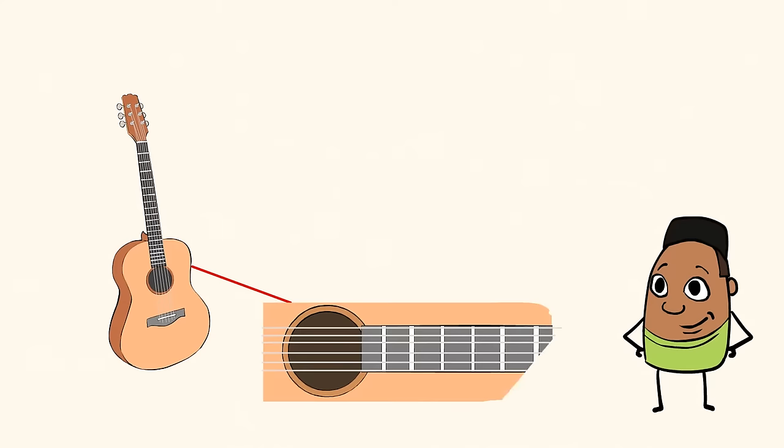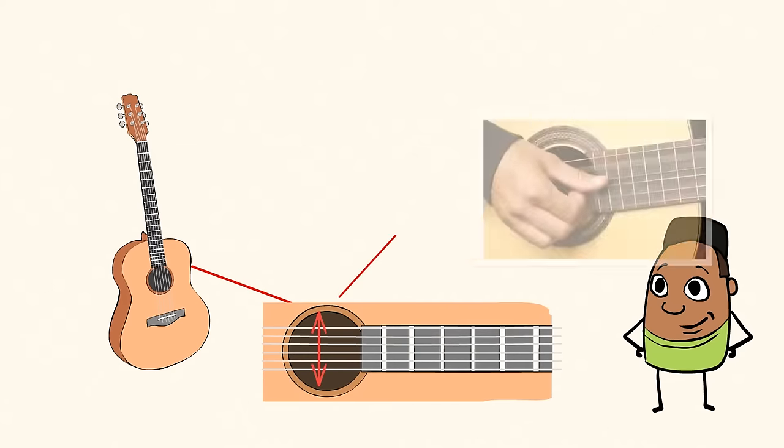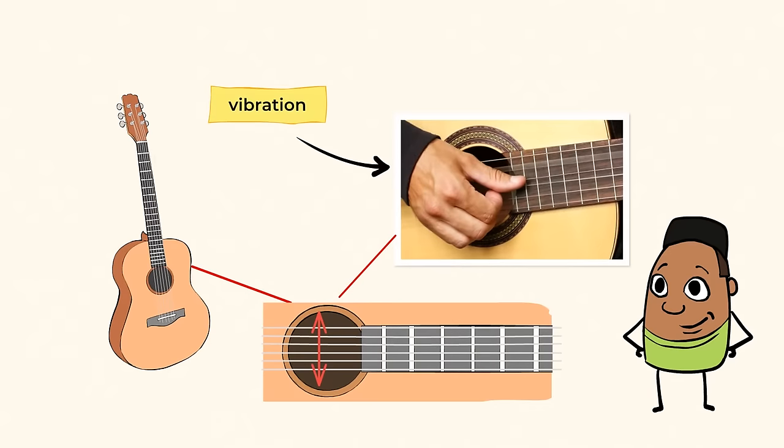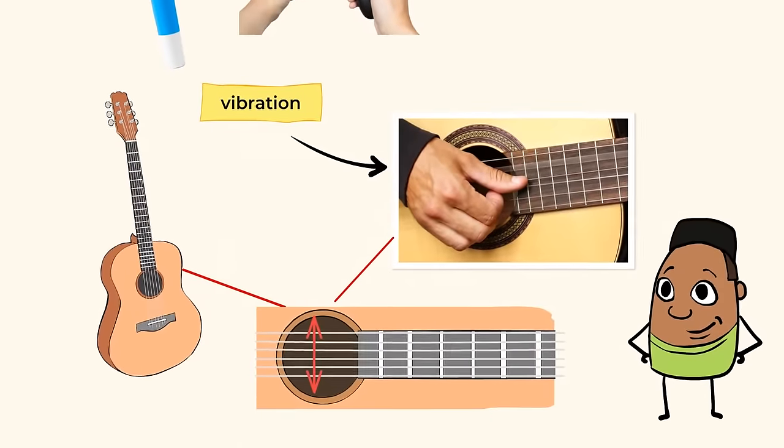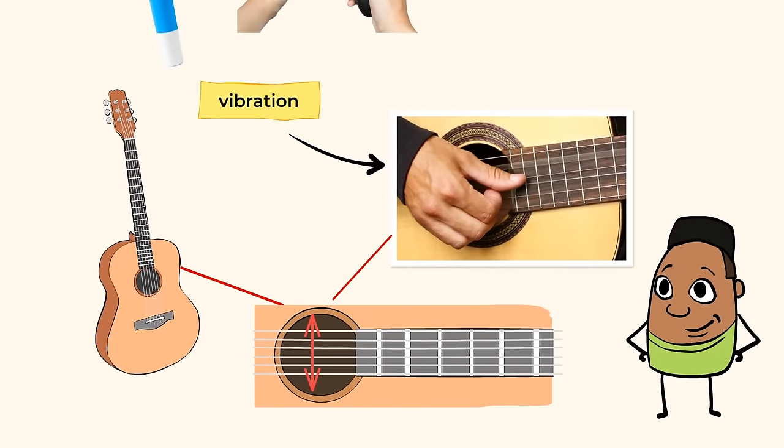Now watch what happens when these guitar strings get plucked. Cool, did you see that? Those strings are moving back and forth really quickly. And that is vibration. When an object moves back and forth quickly, it's vibrating. Kind of like your electric toothbrush or a video game controller. Wow, look how fast those strings are moving.